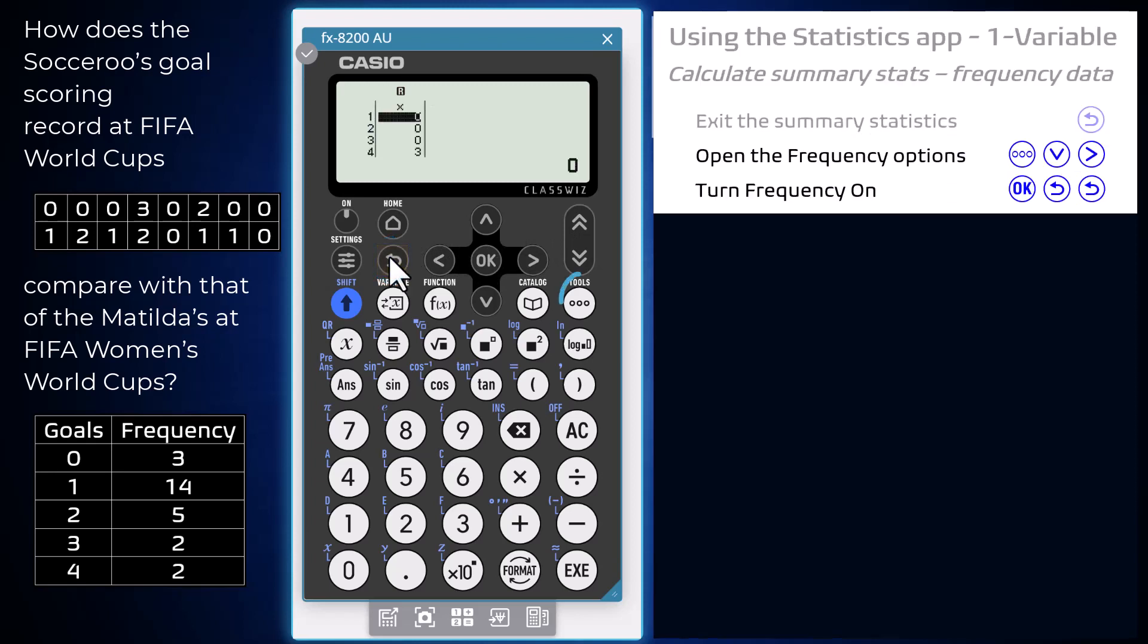To turn on the frequency column, press the tools key and open the frequency option by arrowing down and right. Press OK or execute to turn frequencies on. Now press the back key to exit out of these options.